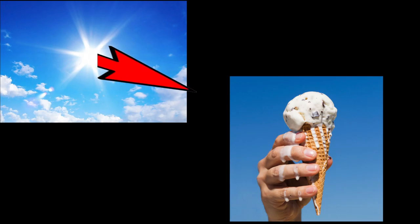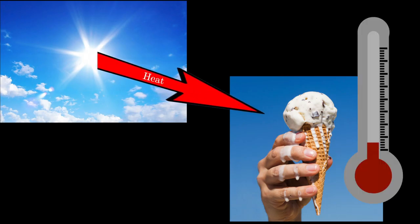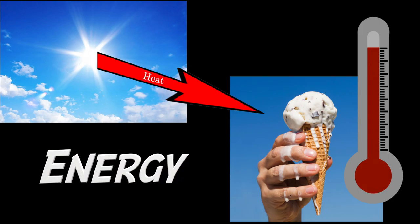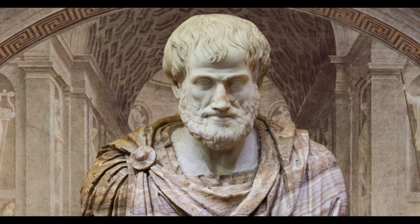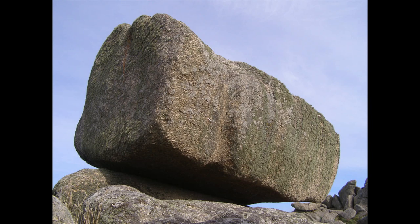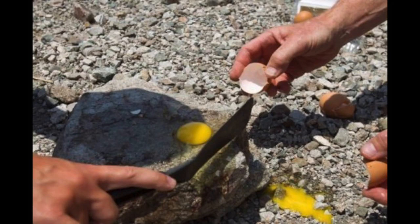One thing we have observed about light is that it heats up objects. This quantitative property of increasing the temperature of objects is our modern definition of energy. Energy is the quantitative property that must be transferred to an object to heat the object. The word energy comes from Aristotle's word 'energia', which means work in regard to things in action. This has different effects on different objects. To a rock, it adds heat. To a puddle of rain water, it dries it up. To an egg splattered onto a rock, it cooks it.